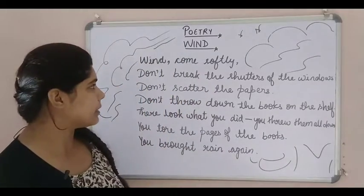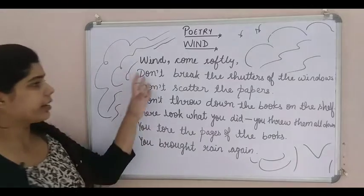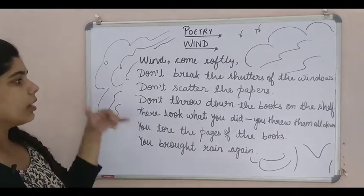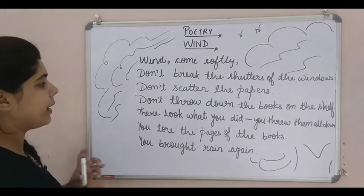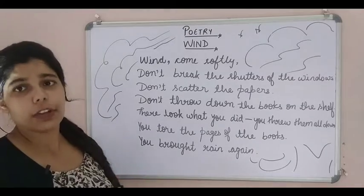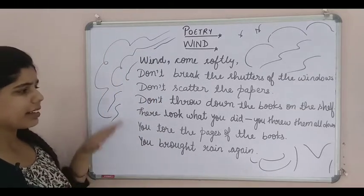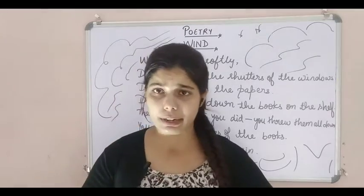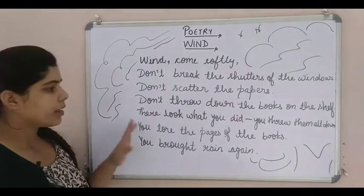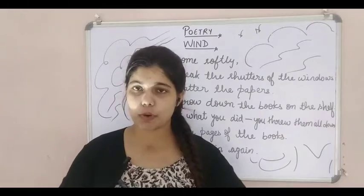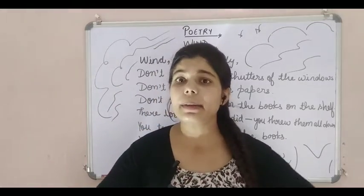Let us start with the explanation of the first stanza. Here the poet is complaining to the wind — every time complaining — that because of the wind all the shutters of the windows have been broken down. It is scattering away all the papers. In the same manner, the poet is also complaining to the wind not to throw down the books from the shelf. Because of the intensity of the wind, each and every book is just falling down. And then again he complains: 'See what you have done — you scattered away all the books which were kept on the shelf. You have torn the pages of the books. You brought the rain again.'